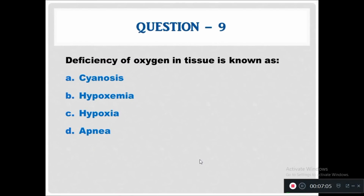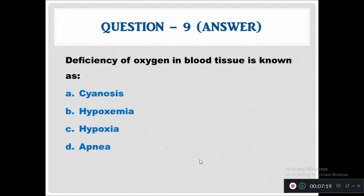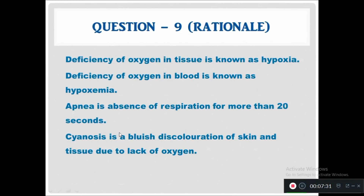Question 9: Deficiency of oxygen in tissue is known as — cyanosis, hypoxemia, hypoxia, or apnea. The right answer is hypoxia. Hypoxia is the deficiency of oxygen in the tissues. Hypoxemia indicates deficiency of oxygen in the circulating blood. Apnea is absence of respiration for more than 20 seconds. Cyanosis is bluish discoloration of skin and tissue due to lack of oxygen.